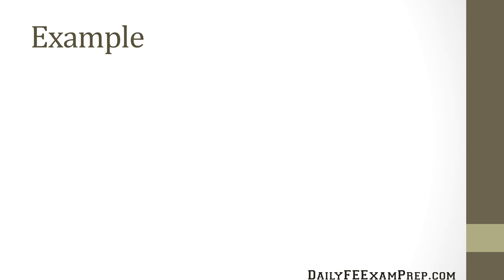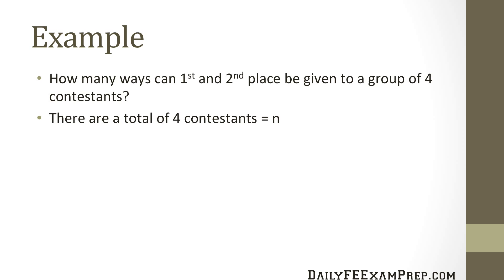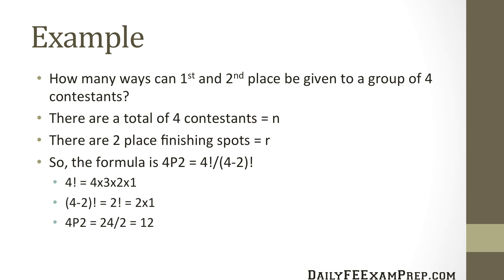So let's go through an example. How many ways can first and second place be given to a group of four contestants? We know that there is a total of four contestants, which is going to be our N value, and there are two place finishing spots, which is our R value. Obviously, order is important because we have first and second place.